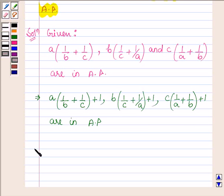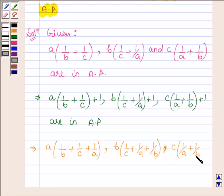Which can be further written as a/(1/b + 1/c + 1/a), b/(1/c + 1/a + 1/b), c/(1/a + 1/b + 1/c) are in AP.